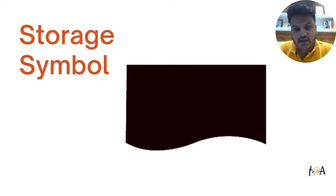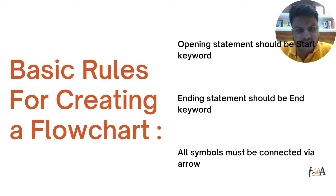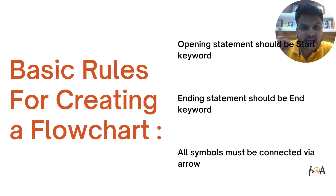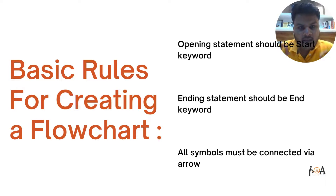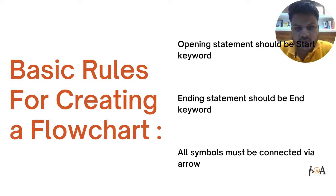These are the important symbols used in any flowchart. Now let's discuss the basic rules for creating a flowchart. The first rule is that the opening statement should start with the 'start' keyword. The second important rule is that the ending statement should end with the 'end' keyword. The third rule is that all symbols must be connected via arrows — apart from the decision symbol, which has its own arrows and direction values, each and every symbol we use in a flowchart must be connected via an arrow.